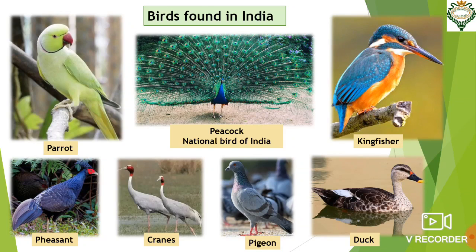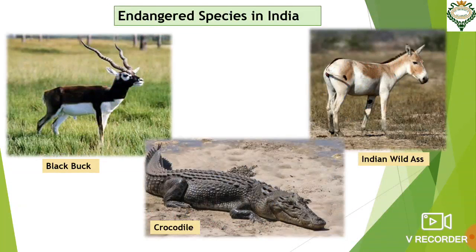Our country is home to more than a thousand species of birds. Peacock is our national bird. Other famous birds found in India are parrots, kingfishers, pheasants, ducks, cranes, etc. Apart from this, there are many different types of animals and birds found in India.